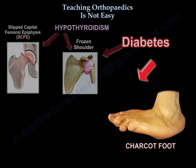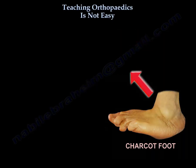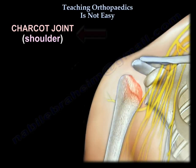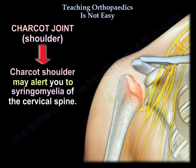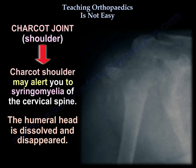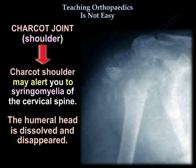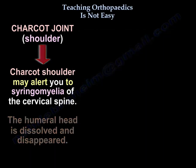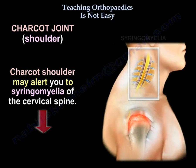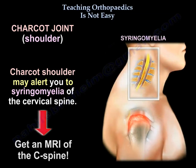On the other hand, a Charcot shoulder may alert you to syringomyelia of the C-spine. The humeral head is dissolved and disappeared. Get MRI of the C-spine.